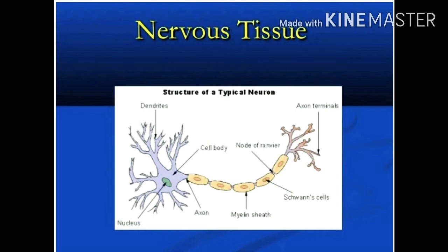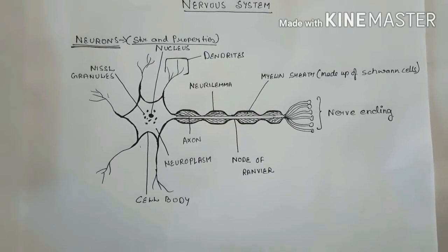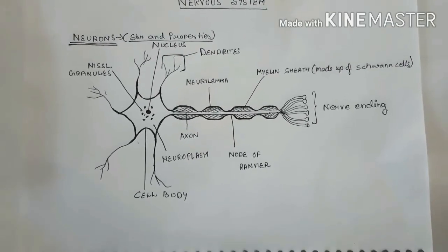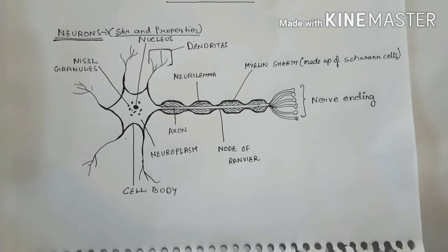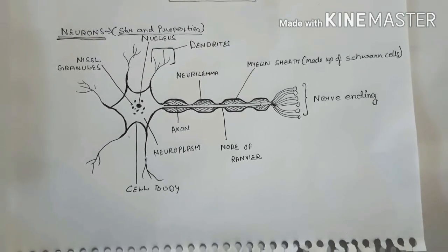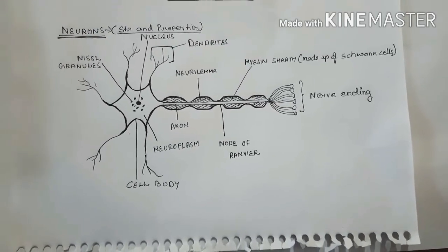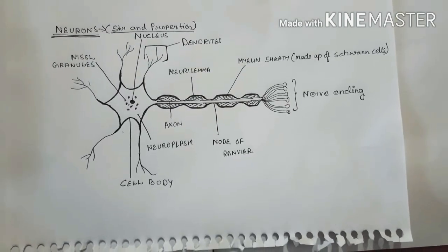Neurons are exactly the structural and functional unit of the nervous system. Nervous tissues are made up of neurons. Now if we look at the structure of neurons, neurons consist of three parts: that is the cell body, dendrons, and axons.